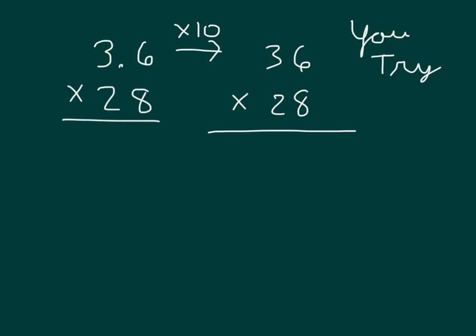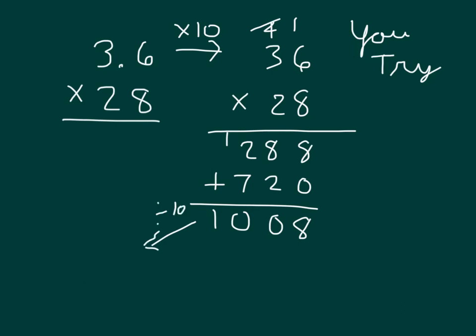Did you write 36 times 28? 8 times 6 is 48, regroup the 4. 8 times 3 is 24, plus 4 is 28. Place a 0. 2 times 6 is 12, regroup of 1. And 2 times 3 is 6, plus 1 is 7. Adding those together, I get 1008, but then I must divide by 10 to get my actual answer, which would be 100.8.